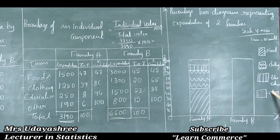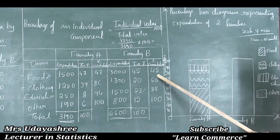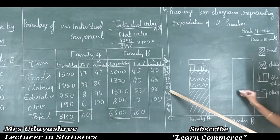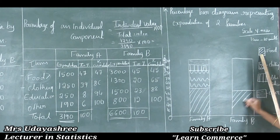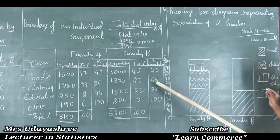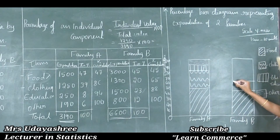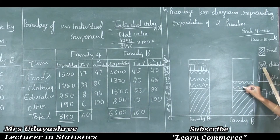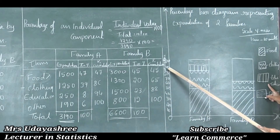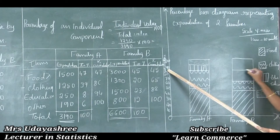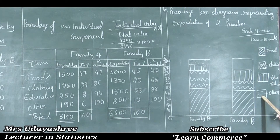For family B: food is 45%, so I mark at 45 and shade. Clothing cumulative is 65%, so I mark there with the clothing shading. Education cumulative is 88%, so I mark there with the education shading. Others goes up to 100 with the others shading index.